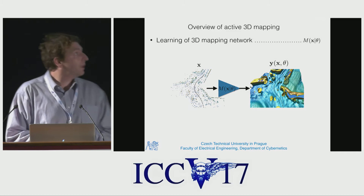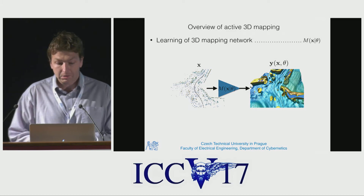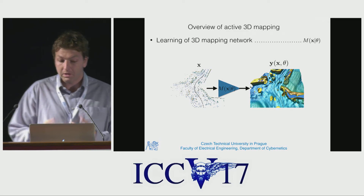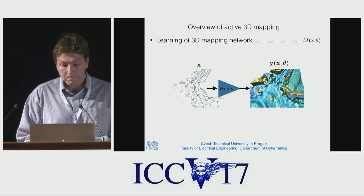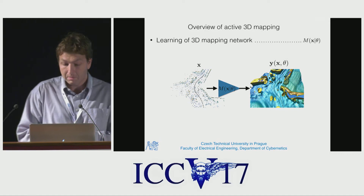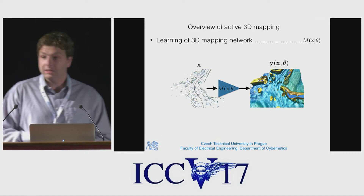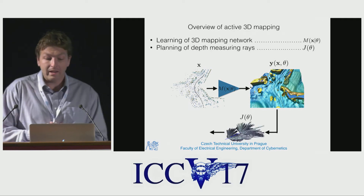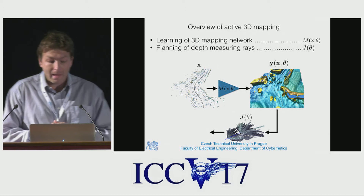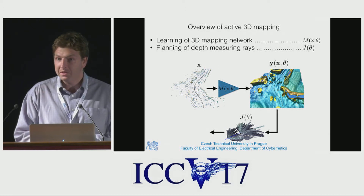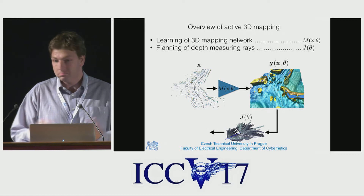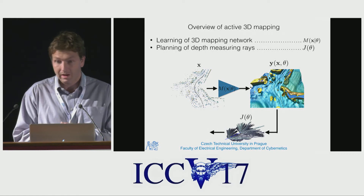We have sparse measurements denoted by X, and we learn parameters of a 3D mapping network theta. This 3D mapping network takes sparse measurements as input and provides dense 3D voxel maps as output. We then take the currently available map and plan depth measuring rays in order to decrease map reconstruction error.